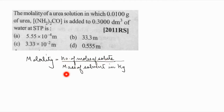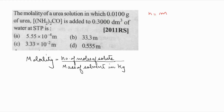How can you calculate the number of moles of the solute? For that, they have given the mass of the solute — mass of urea is 0.01 gram. To calculate number of moles, we have a shortcut formula: number of moles is equal to given mass divided by molar mass. The given mass of the solute (urea) is equal to 0.01 gram, divided by the molar mass.